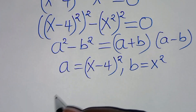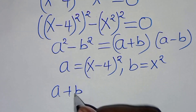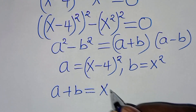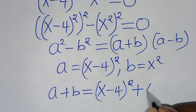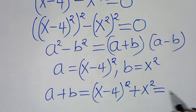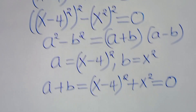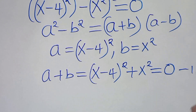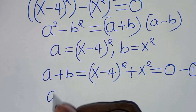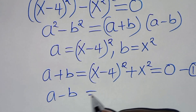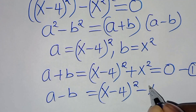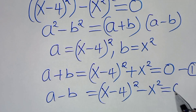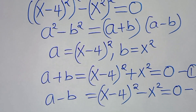So this implies that a plus b is equal to x minus 4 raised to power 2, plus x to power 2, this is equal to 0. Let's call this equation 1. And we have that a minus b is the same thing as x minus 4 raised to power 2, subtract x to power 2, this is equal to 0. Let's call this equation 2.